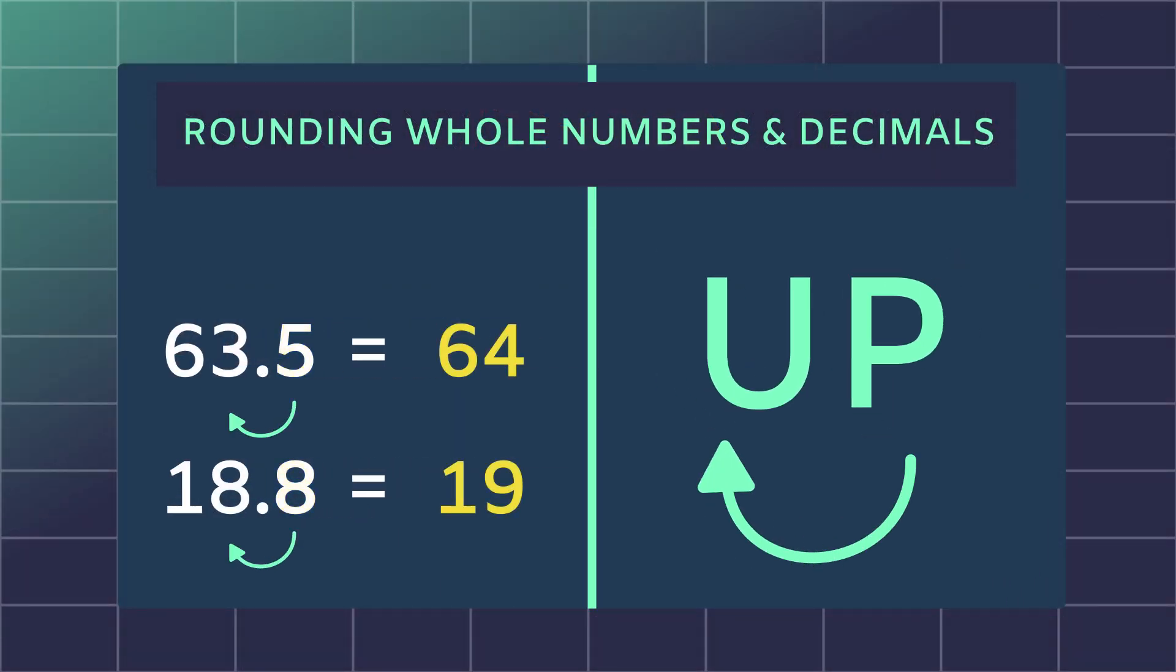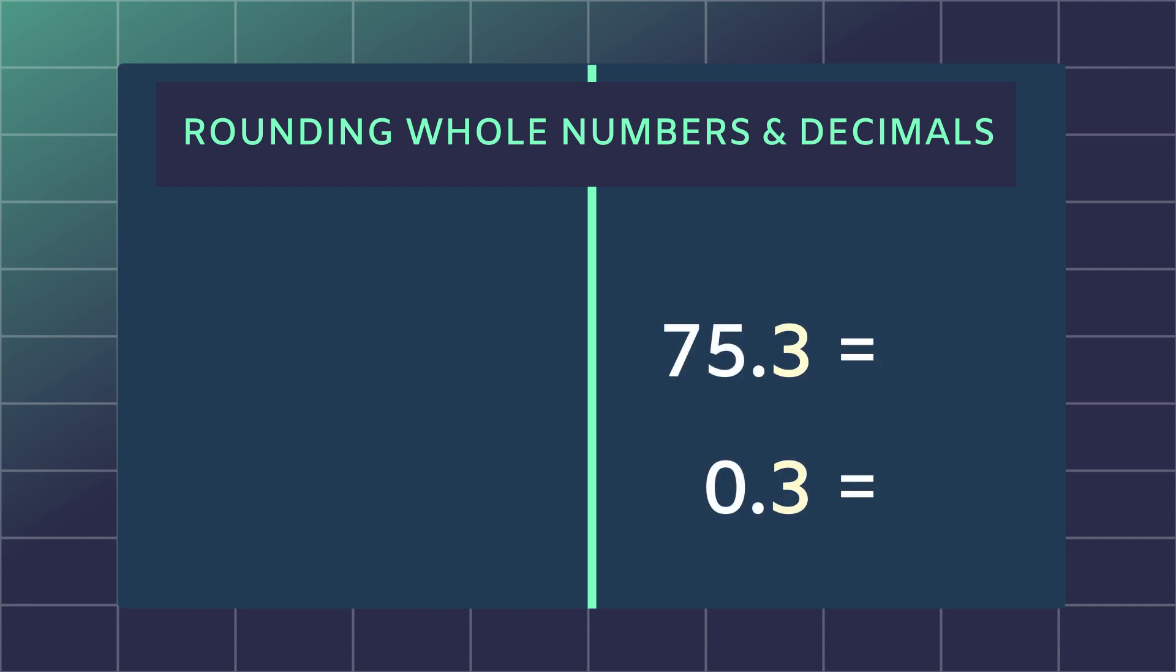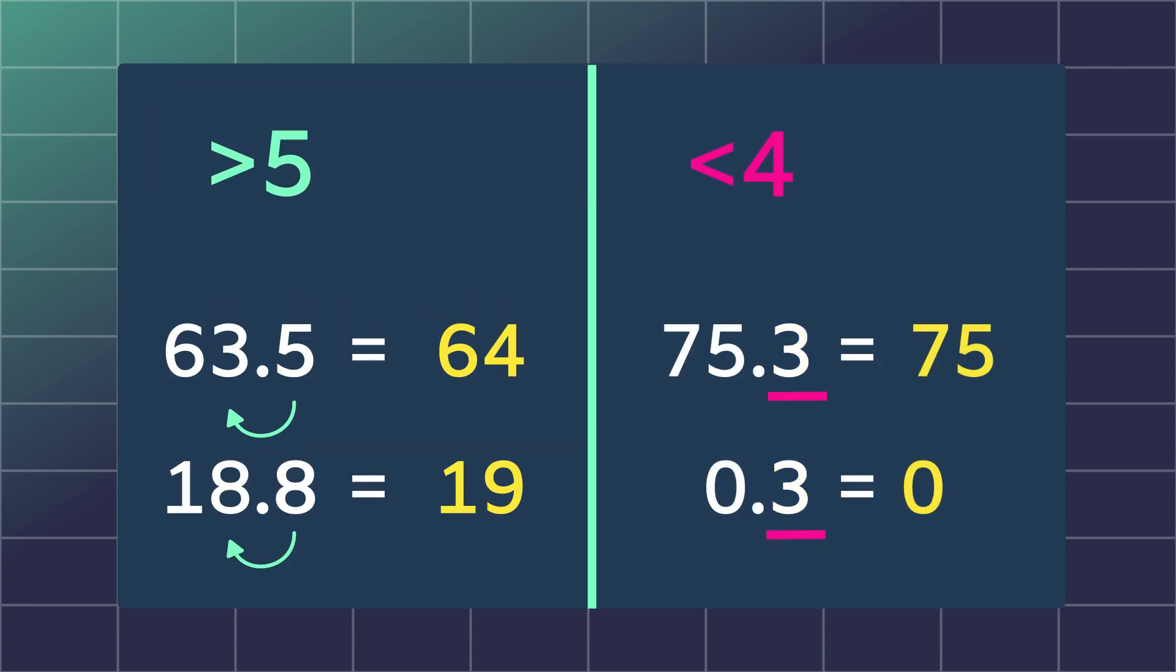If your number ends in a five or more, you'll round up. If the number ends in a four or less, you'll round down. This rule applies to both whole numbers and decimals and the place value to be rounded.